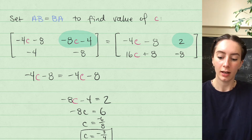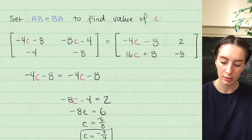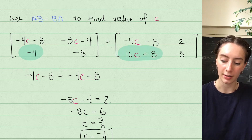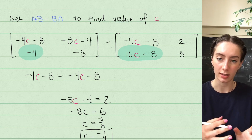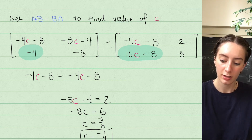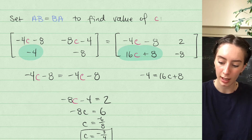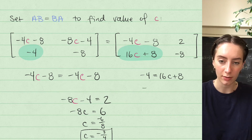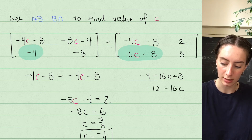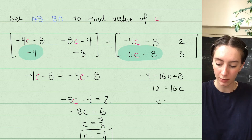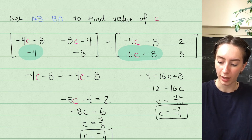To verify, we check the third entry. Setting negative 4 equal to 16C plus 8, we move 8 to the left: negative 12 equals 16C. Dividing both sides by 16 gives C equals negative 12 over 16, which is the same as negative 3 quarters. So that checks out.